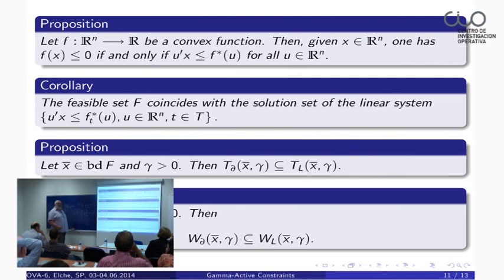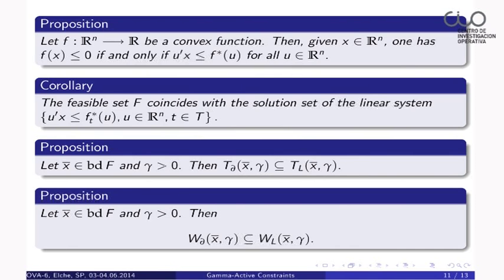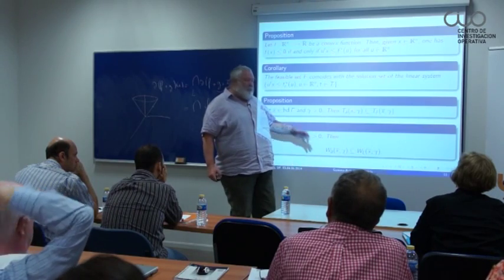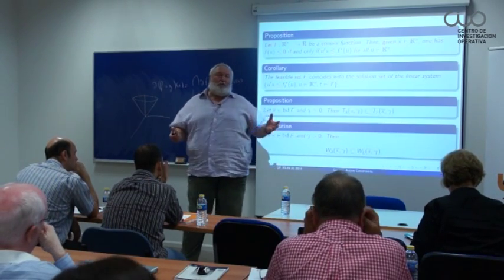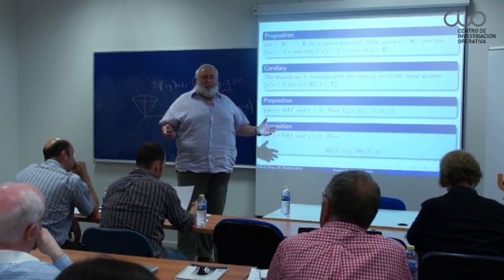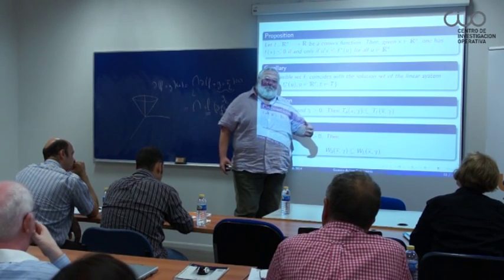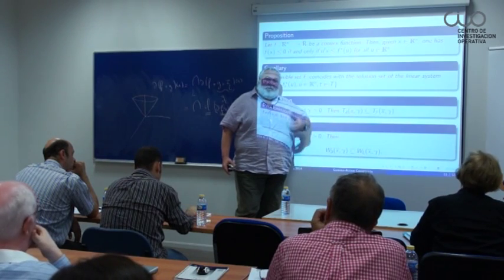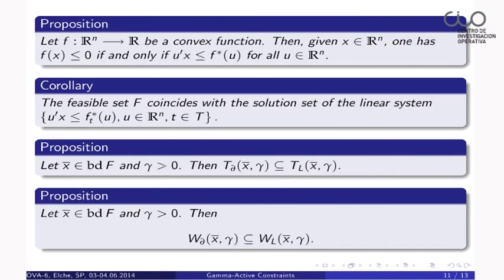There are propositions showing that the set of gamma-active indices using subdifferentials is smaller than the one using linearization, and there are examples showing this inclusion is strict. The same holds for the gamma-active constraint sets. This means the subdifferential-based gamma-active constraint set is better — in the sense that it is smaller. If I replace the gamma-active constraints with all of R^n it does not help, so I need something smaller and smaller. The subdifferential approach is therefore more useful for checking local information such as feasibility and optimality.